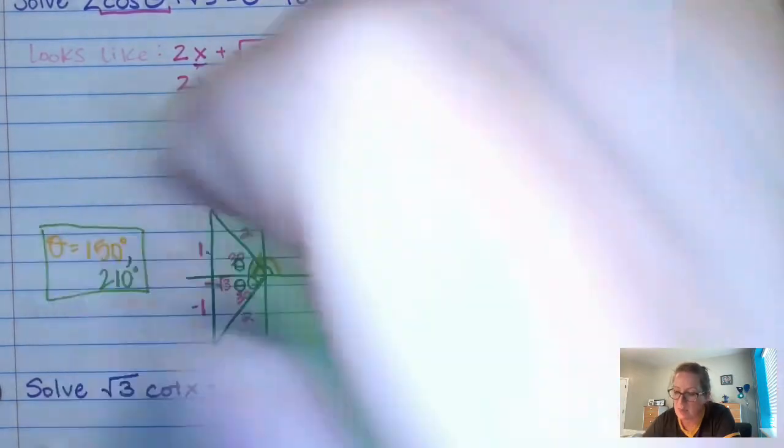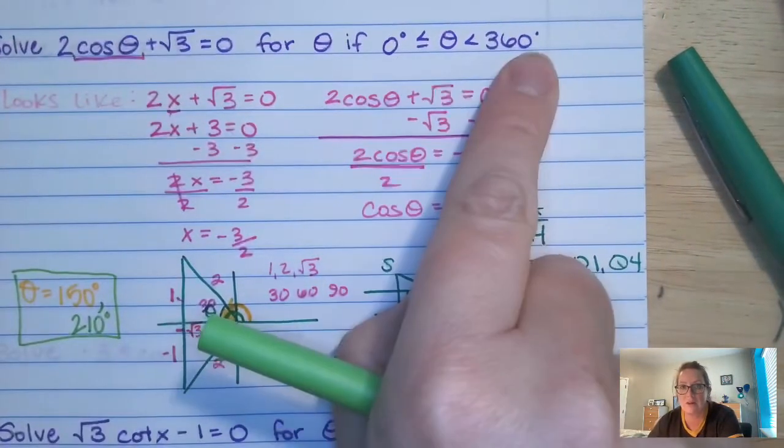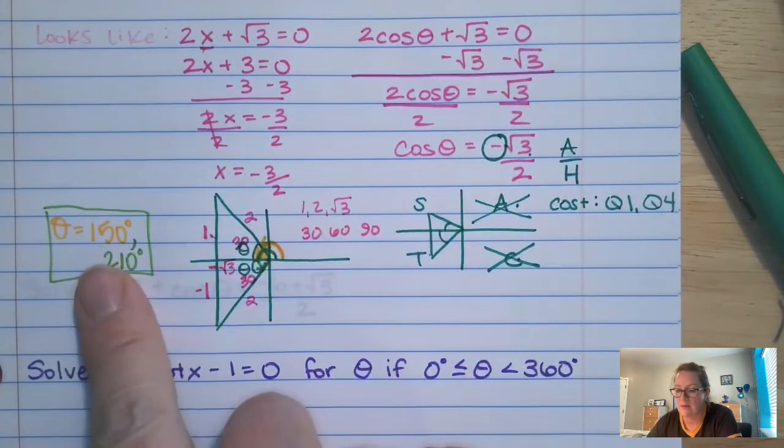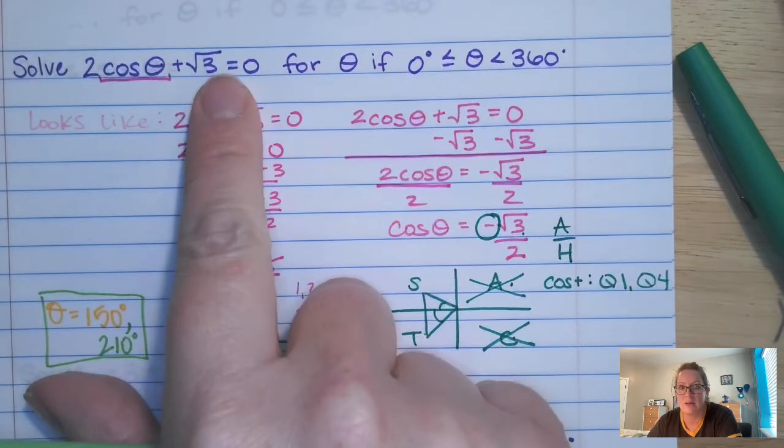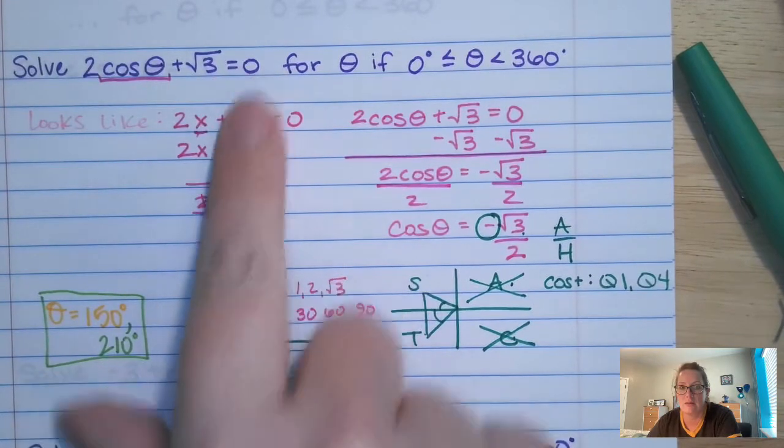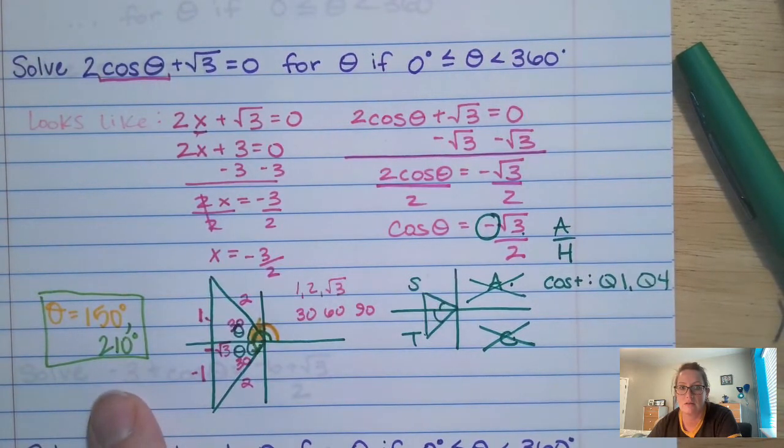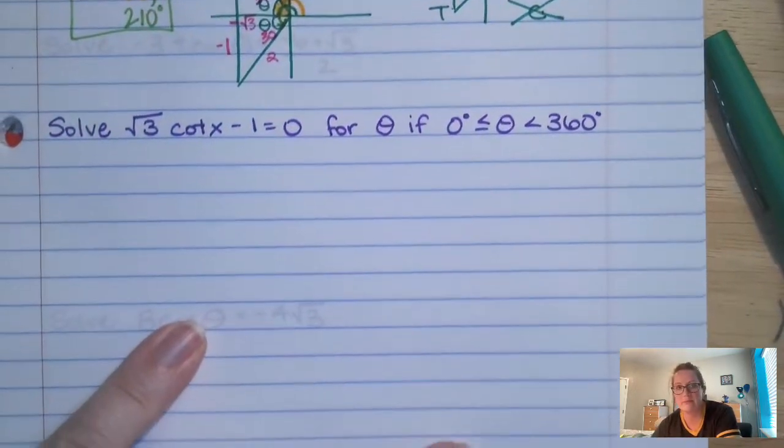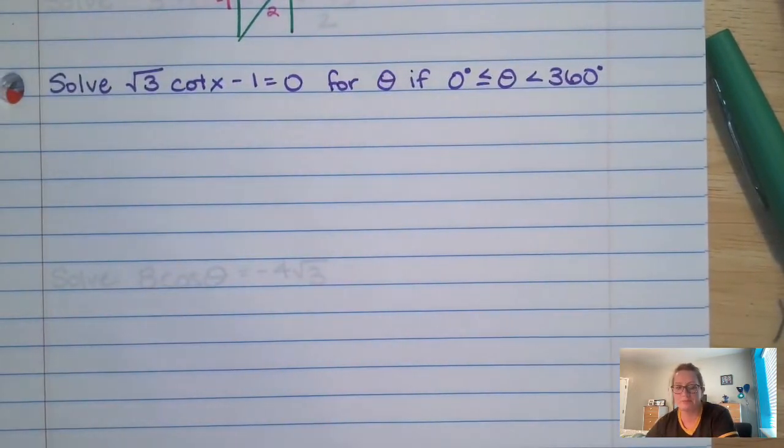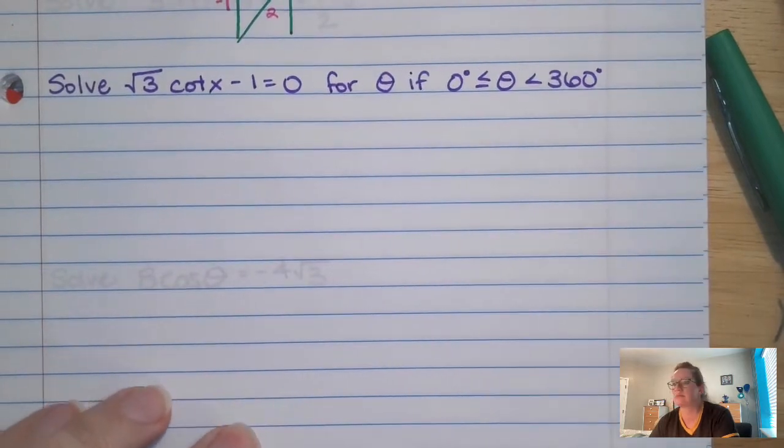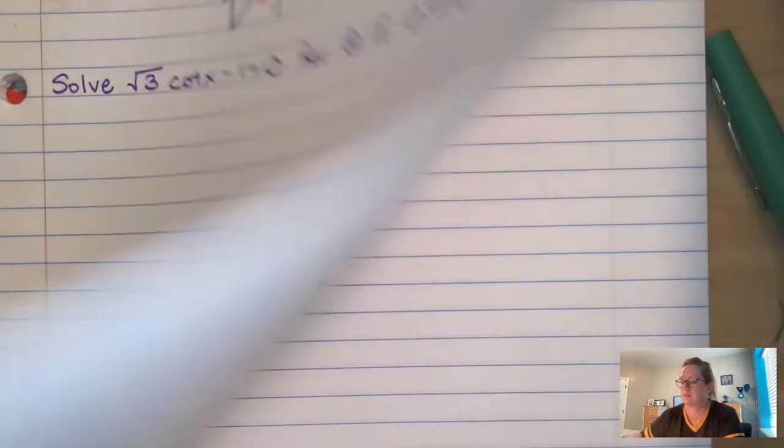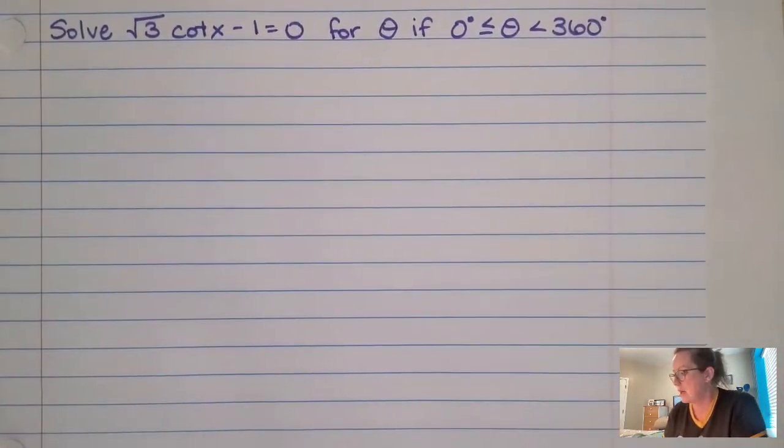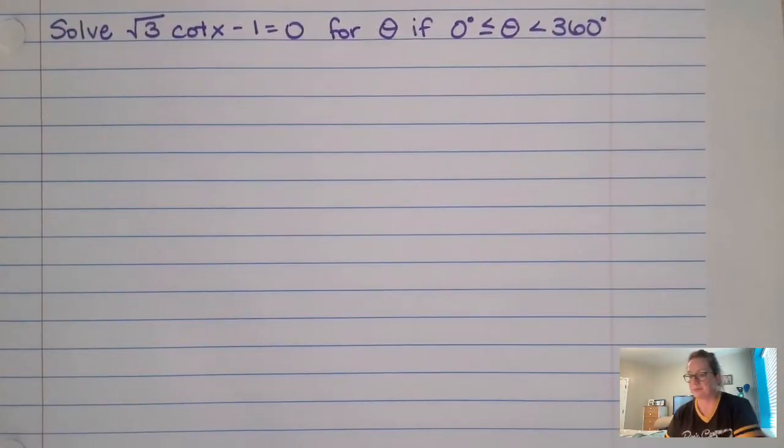Now we've got to figure out what the other theta is. If we go here, we've got 180 degrees. We know that this is 30, so we need to go just 30 more degrees. So 180 plus 30 degrees, our other theta is going to be 210 degrees. And we stop because it says it has to be in between 0 and 360.